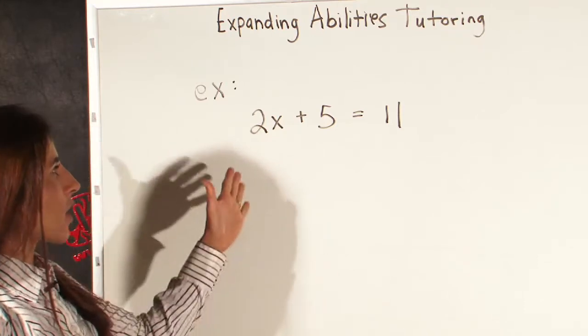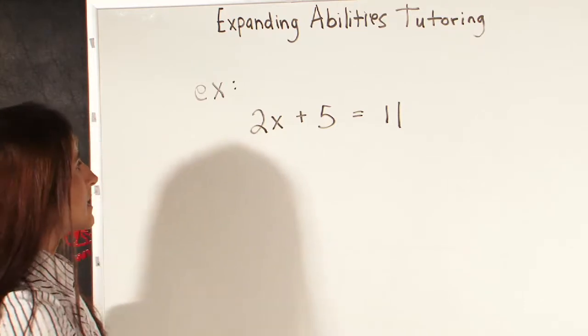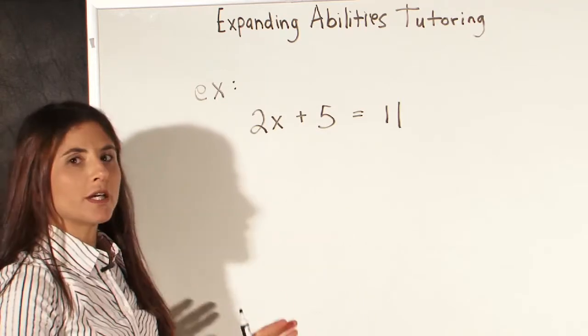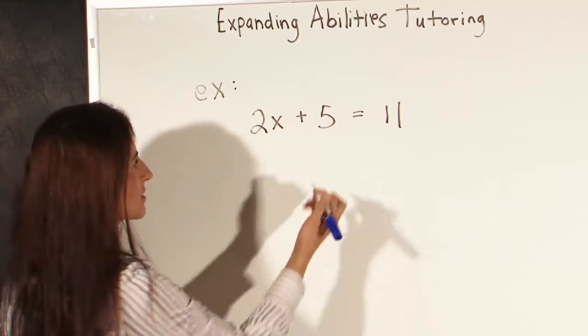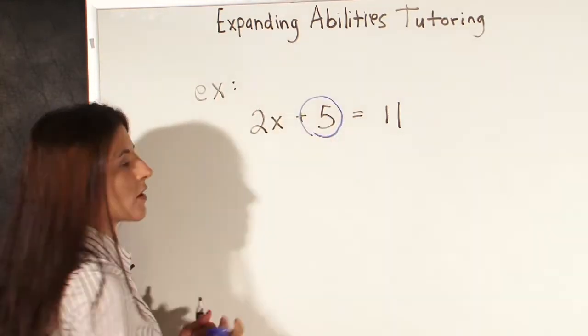The important thing to remember when solving a problem like this is that first we need to move the constant term here, the term that is not attached to the x. So see the 5, plus 5 is all by itself.